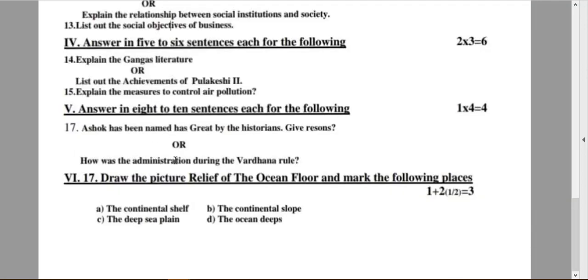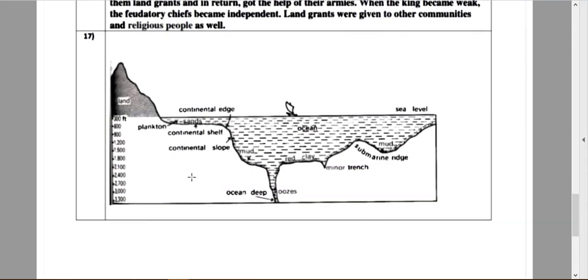Last domain, question number 17. Sixth domain: draw the picture relief of ocean floor and mark the following places. So, here it is the continental shelf, continental slope, deep sea plain, ocean deeps. To draw one mark, location of the places, two marks. So, here is the picture: continental shelf, continental slope, ocean deep, deep, continental edge, deep sea plain. So, this is about the picture you have to draw. If you draw this picture, you will get three marks.